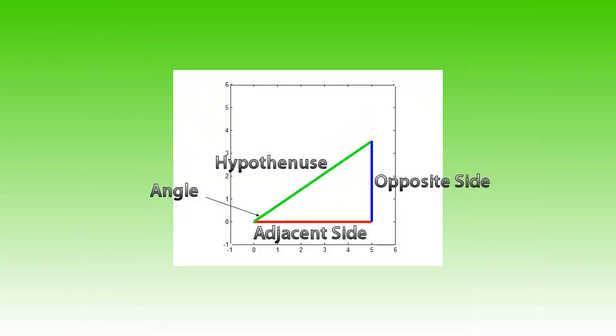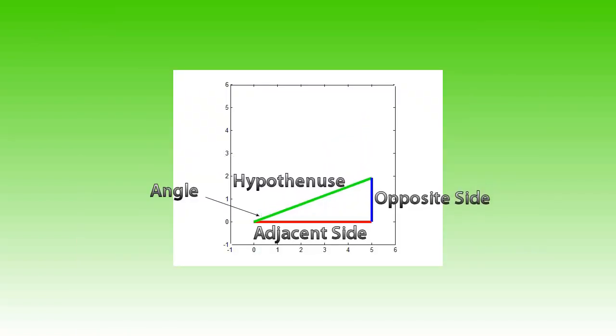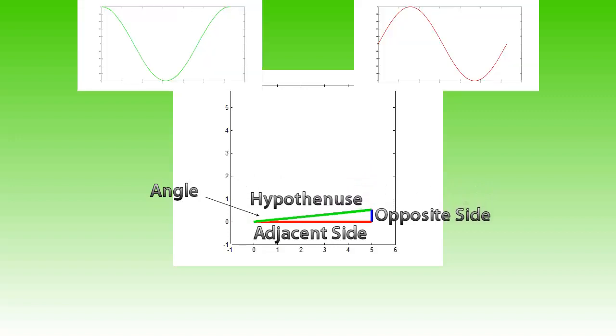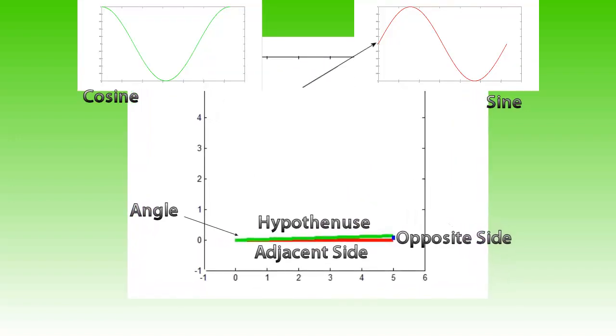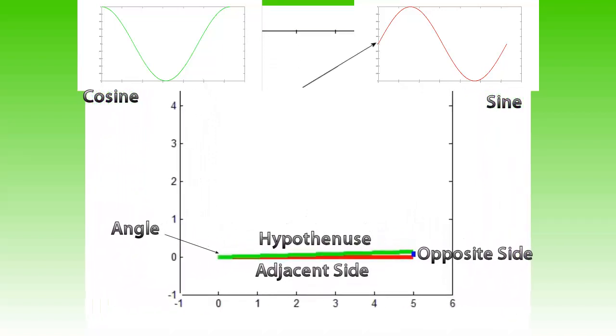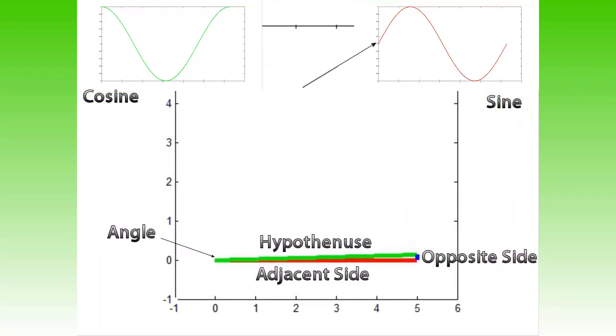Obviously, we can do the same for the opposite side, which becomes 0 when the angle becomes 0. From the graphs, we can see that the sine is 0 when the angle is 0. So the relation between the opposite side and the hypotenuse is the sine.